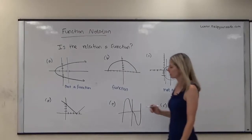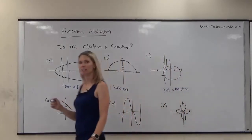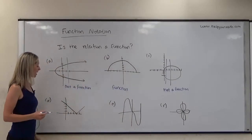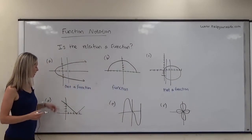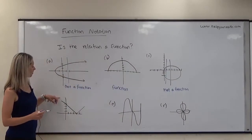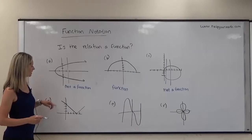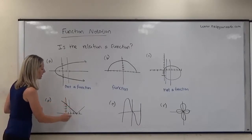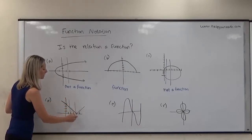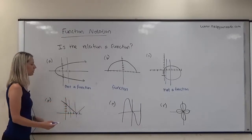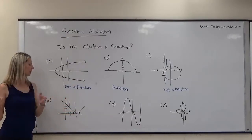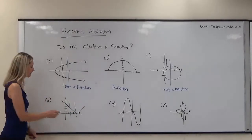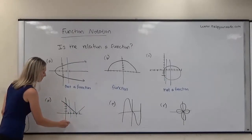In letter D at the bottom, you might recognize this — this is a graph of an absolute value. Will this pass or fail the vertical line test? Anywhere I draw a vertical line, is it going to hit the graph more than once? Nope. So because it hits the graph one time or zero times, this is a function.